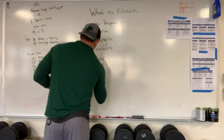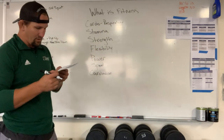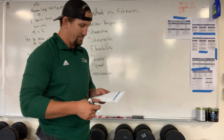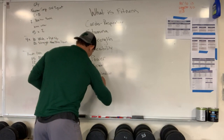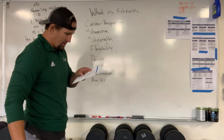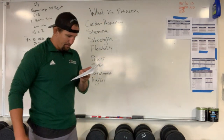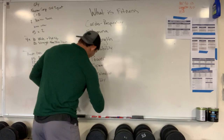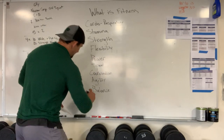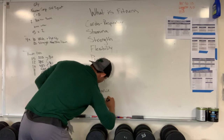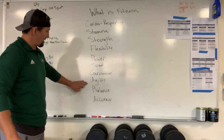Number seven: coordination — the ability to combine several distinct movement patterns into a singular distinct movement. Number eight: agility — the ability to maximize transition time from one movement pattern to the next. Number nine: balance. And number ten: accuracy — how consistently can you repeat the same thing over and over? That's all ten.